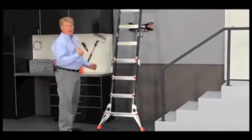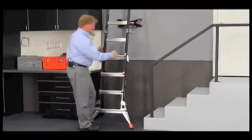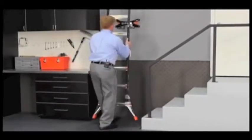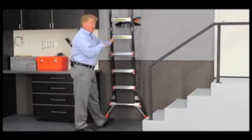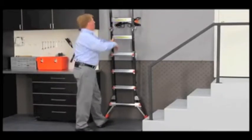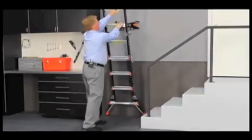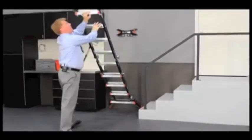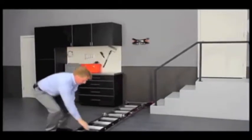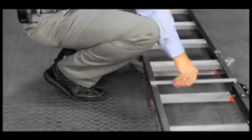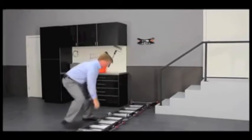To take the ladder down in this position, you want to do it the exact opposite. Again, either have somebody support the bottom of the ladder or push it up against a wall for support, and then hand over hand reverse that process. Lay it back down on the ground, squeeze those rock locks, and telescope it back in on this side as well. Stand it back up.